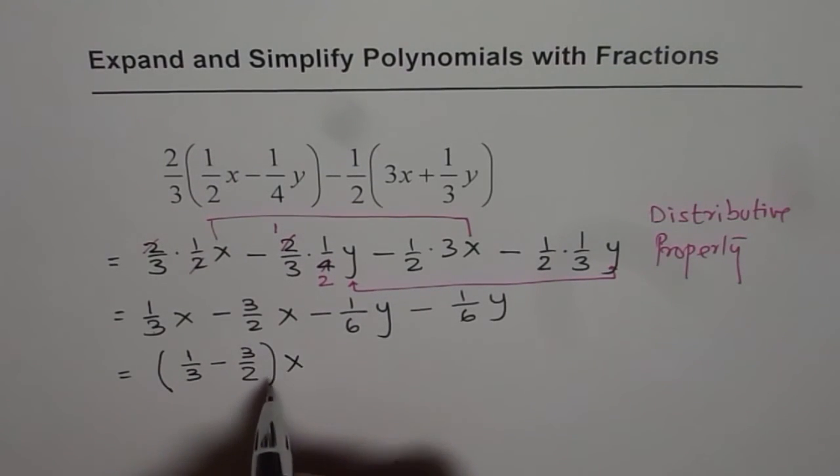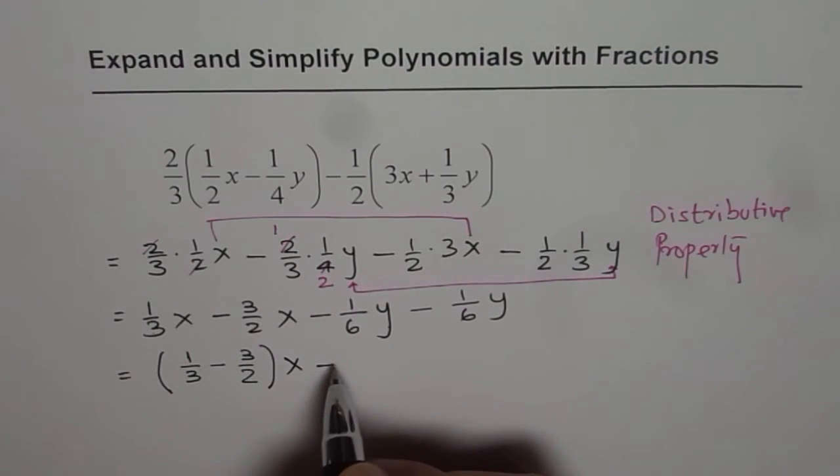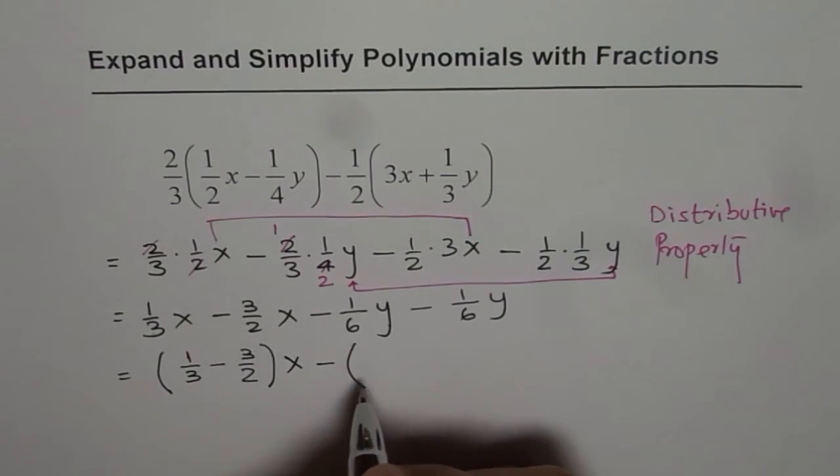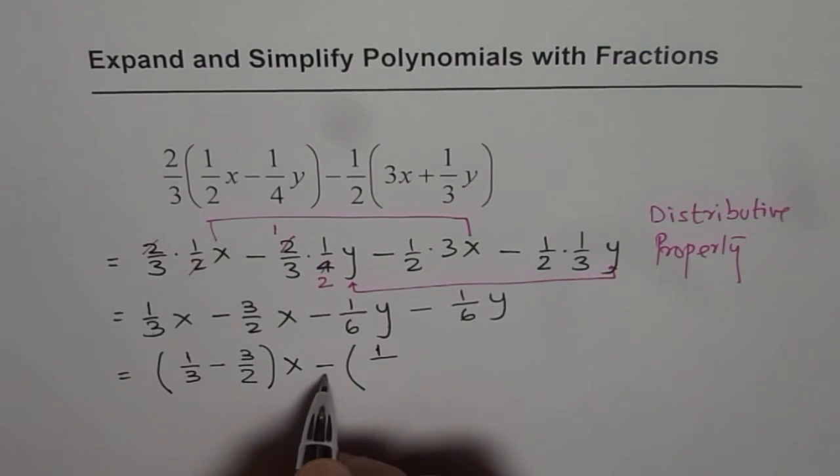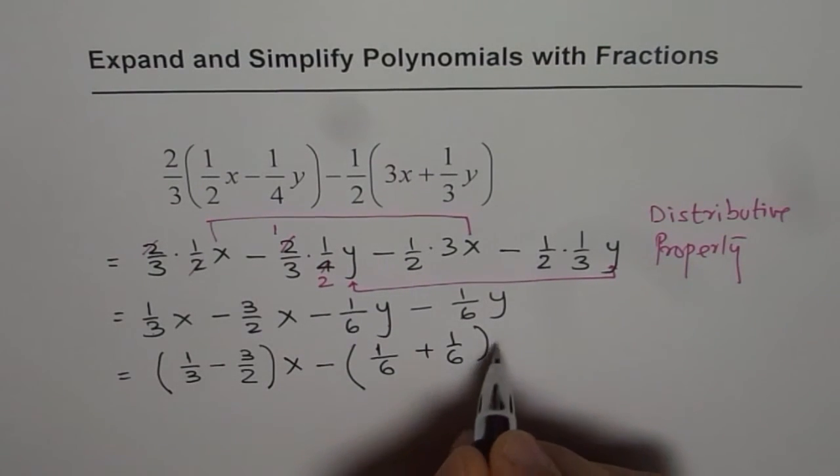This is the x part, minus here we can write the y part so it is negative. So if I take negative y common, when I take negative outside all the signs will change. It becomes 1 over 6 plus 1 over 6 of y, correct.